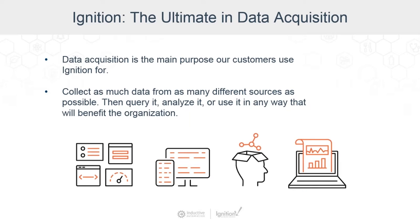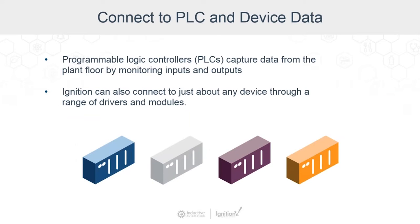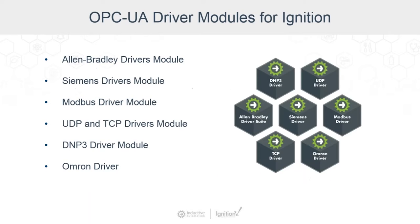With Ignition, you connect the data from any PLC or device. PLCs are really the basis of most control systems. They automate electromechanical processes and are used to control machinery. They also capture data from the plant floor by monitoring inputs and outputs. Ignition also connects to just about any device used by industrial organizations. It does this through a range of different drivers and modules. OPC UA driver modules are a group of Ignition modules that require the OPC UA module and are focused on establishing communication to specific devices.